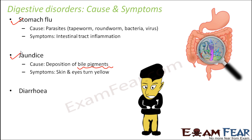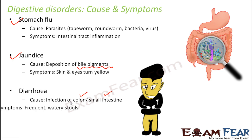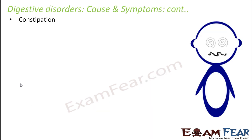Diarrhea is associated with loose motions where very frequent defecation happens. It occurs when there is some infection of the colon or the small intestine, since the large intestine is mostly responsible for the formation of feces. The symptom is frequent watery stools — because the large intestine is not functioning properly, it is unable to absorb water, so watery stools come out very frequently.